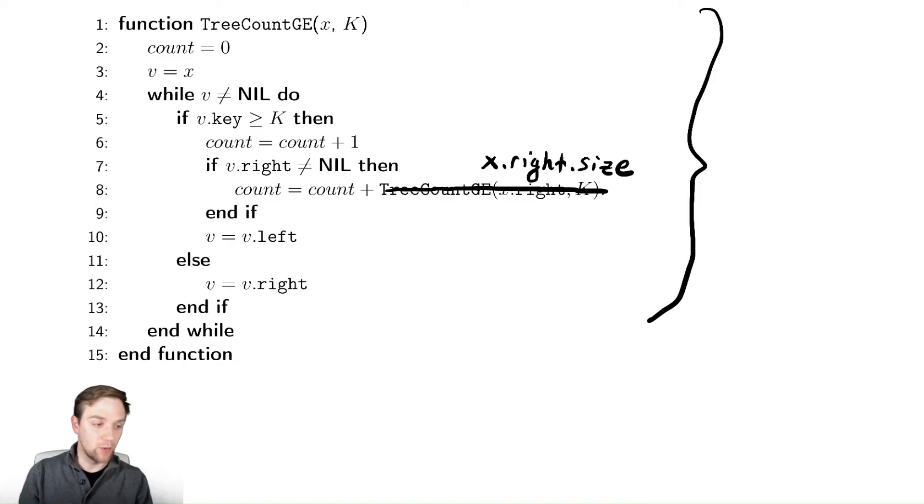When we have a while loop or something where we are making a single decision as to which way to descend, it's going to be in theta of h.